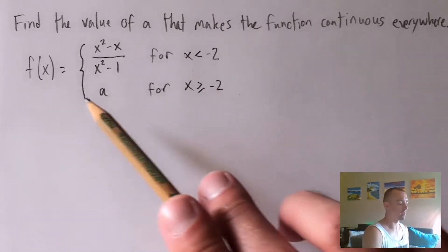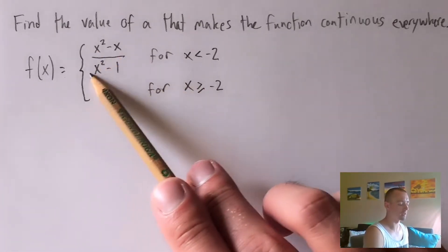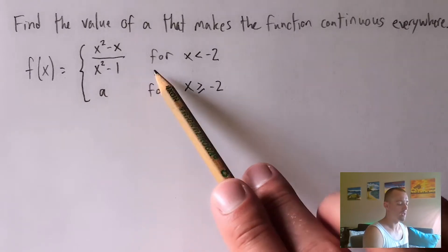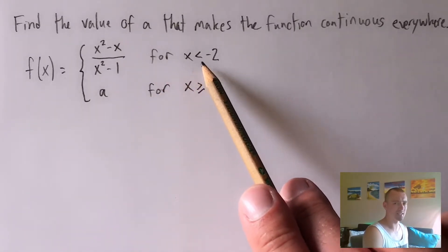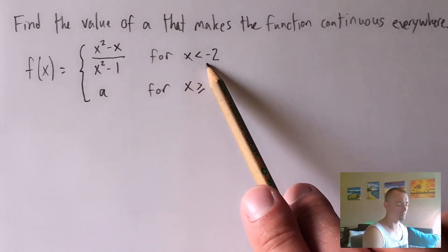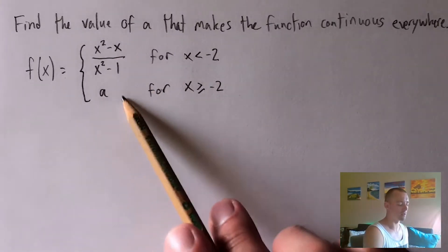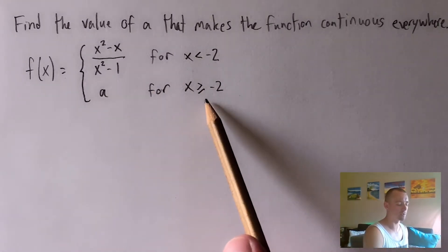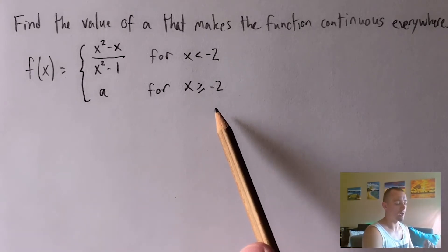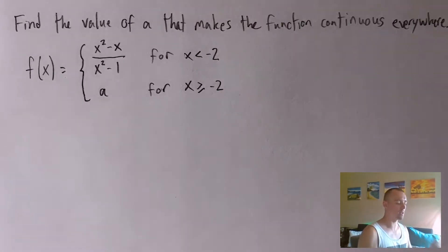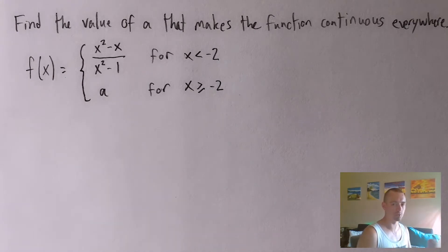X squared minus X all over X squared minus one has to be continuous for all X values less than negative two. And this constant A has to be continuous for all X's greater than or equal to negative two. Then once we confirm those two things, we can figure out if it's continuous when we switch from one to the other at X equals negative two.